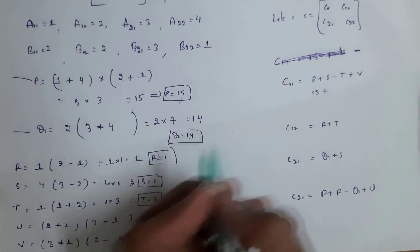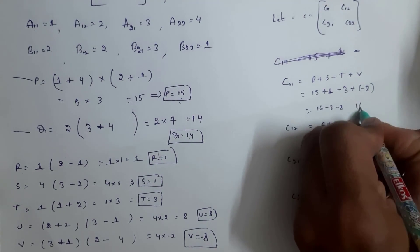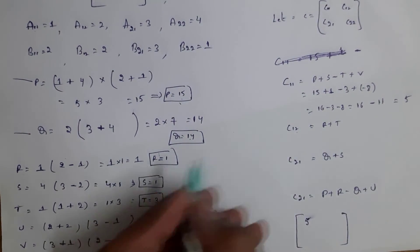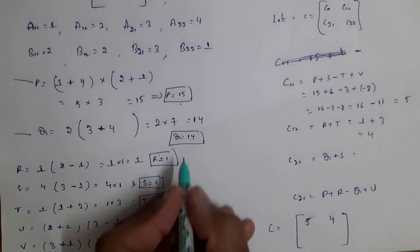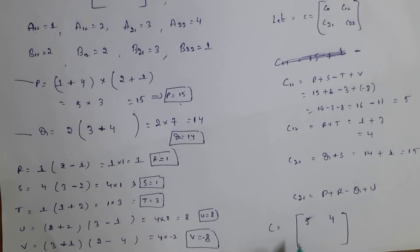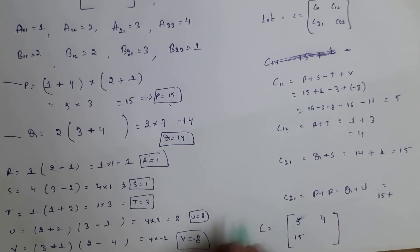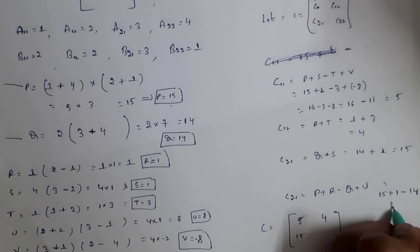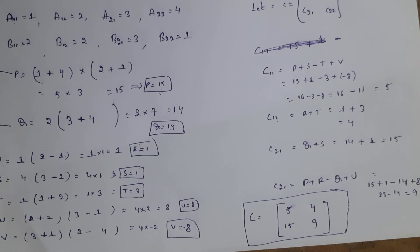Now we find matrix C. c11 = P + S − T + V = 15 + 1 − 3 + (−8) = 16 − 11 = 5. c12 = R + T = 1 + 3 = 4. c21 = Q + S = 14 + 1 = 15. c22 = P + R − Q + T = 15 + 1 − 14 + 8 = 9. This is the final output. This is how we solve Strassen's matrix multiplication — one of the important questions in your exam.